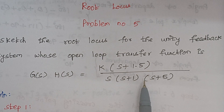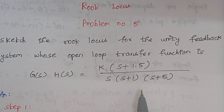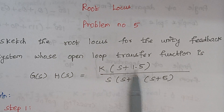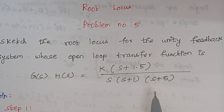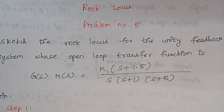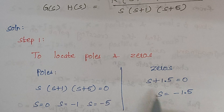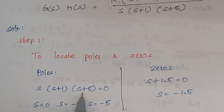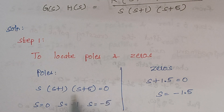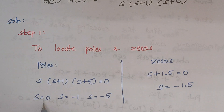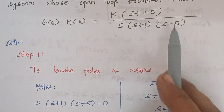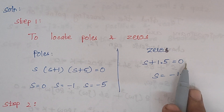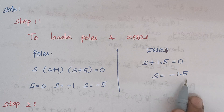From the transfer function we can tell how many poles and zeros are present. The denominator terms are known as poles and the numerator terms are known as zeros. Here we are having three poles and one zero. Step one is to find out the values of poles and zeros. The poles are s(s+1)(s+5) = 0, giving s = 0, -1, and -5. We have only one zero at s+1.5 = 0, so s = -1.5.